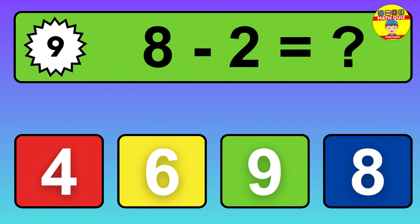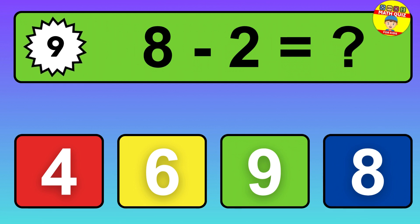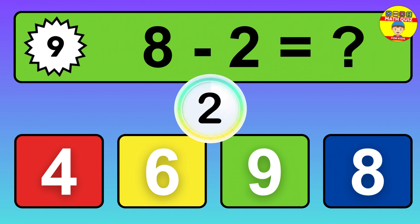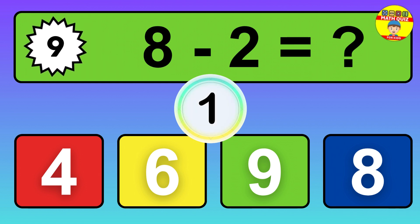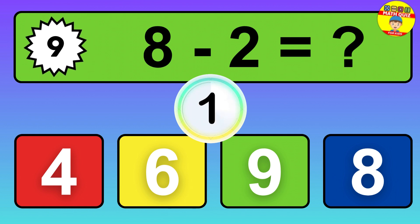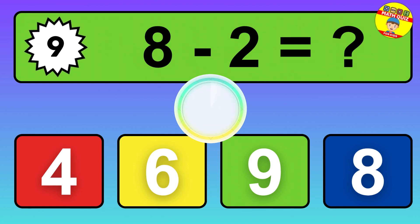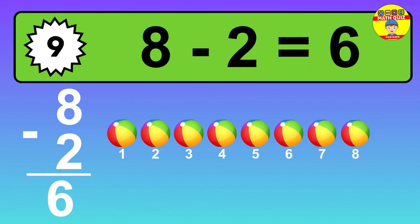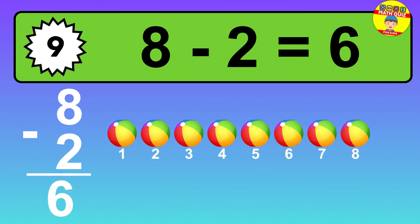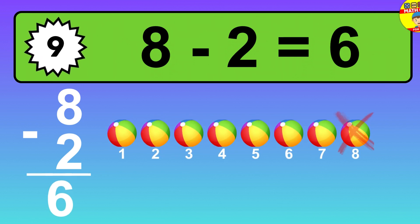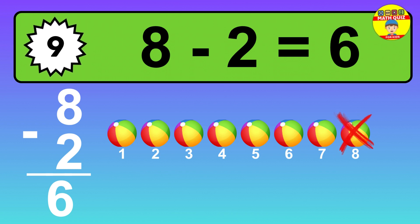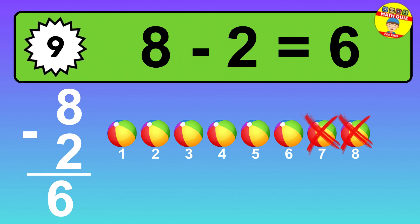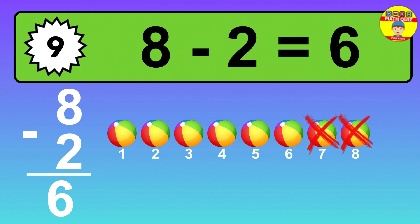Question 9. 8 minus 2 equals what? So the answer is 8 minus 2 is 6. Let's count it. 1, 2, 3, 4, 5, 6.